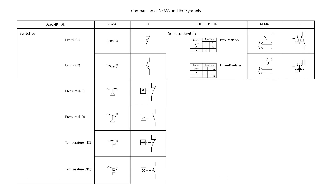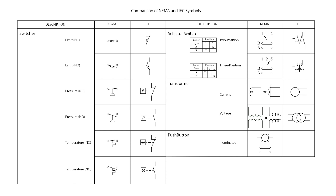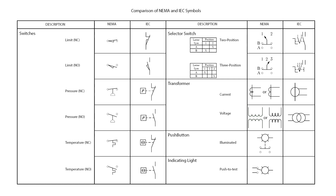Here is the symbol for the limit, pressure, temperature, and selector switch. The majority of selector switches come in either two or three-way position. The tables show which contact is made when the switch is actuated. Next we have the transformers — there are two types: current transformer and voltage transformer. There are also push buttons that illuminate when they are actuated — this is the NEMA symbol for it; currently there is not an IEC comparison. There is also a push-to-test indicating light, which is useful to test if the bulb in the light is properly working when not in operation.